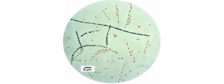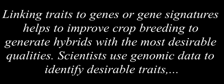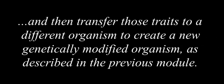Bacillus anthracis is the organism that causes anthrax. Genomics in Agriculture. Genomics can reduce the trials and failures involved in scientific research to a certain extent, which could improve the quality and quantity of crop yields in agriculture. Linking traits to genes or gene signatures helps to improve crop breeding to generate hybrids with the most desirable qualities. Scientists use genomic data to identify desirable traits and then transfer those traits to a different organism to create a new genetically modified organism.